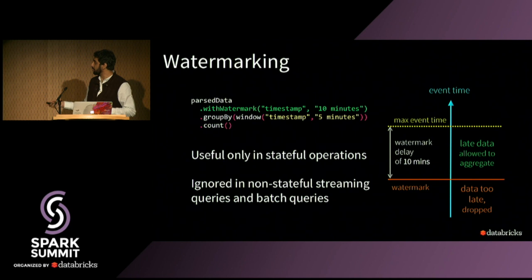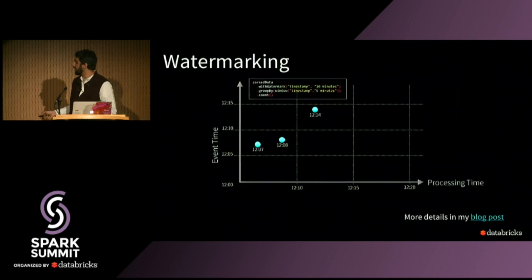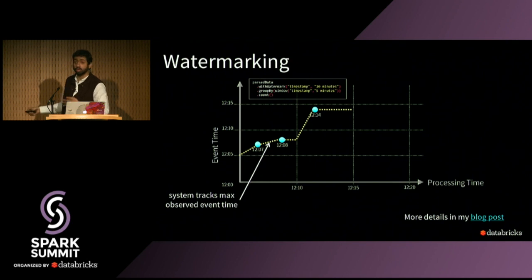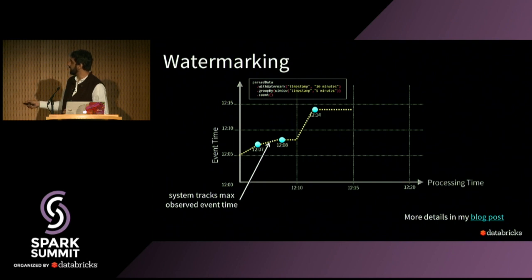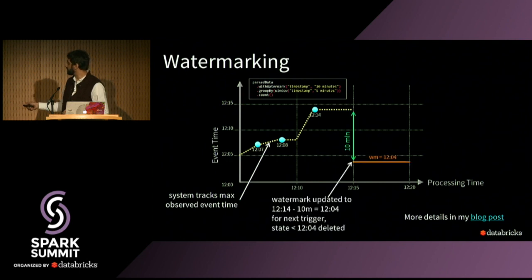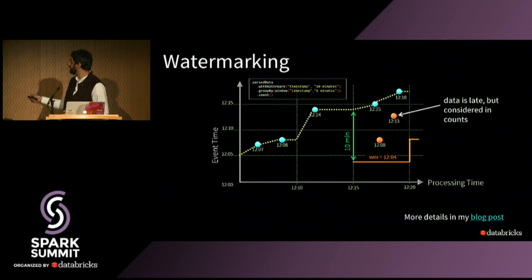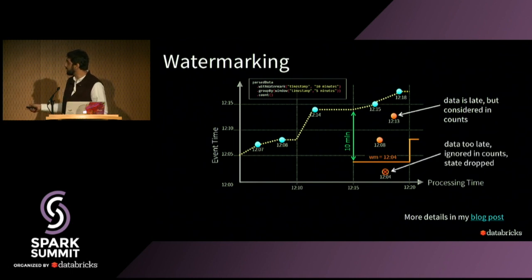When you specify a watermark, the system keeps track of the maximum event time in the data. The y-axis represents event time and the x-axis is processing time or wall clock time as the streaming query runs. As data comes in with varying degrees of event time, the system tracks the max event time and accordingly calculates what the watermark should be. Any data that arrives out of order but still above the watermark will be considered and counts updated, but any data older than the watermark will be ignored.